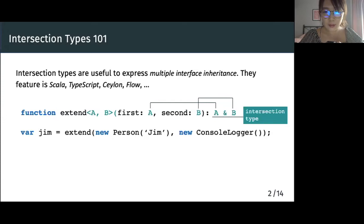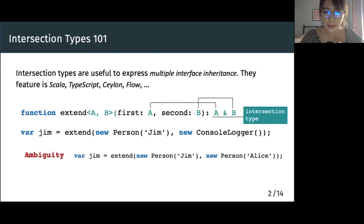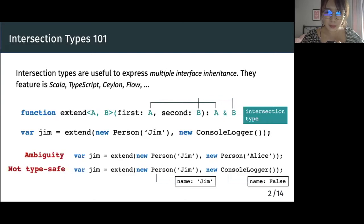Unfortunately, the Extend function in TypeScript suffers from ambiguity issues. Given two objects with the same field or method names, Extend does not detect potential conflicts. Instead, it silently composes the two objects. It can unintentionally override methods without any warning or errors. Additionally, the Extend function is not type-safe. If two objects have the same property name with different types, Extend may look up the property of the wrong type.